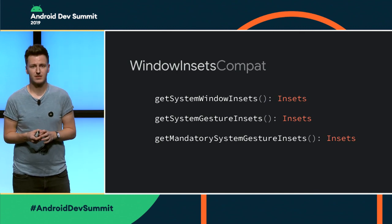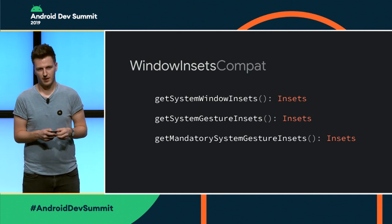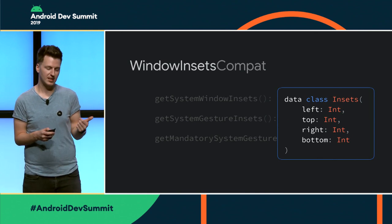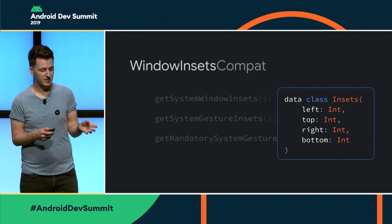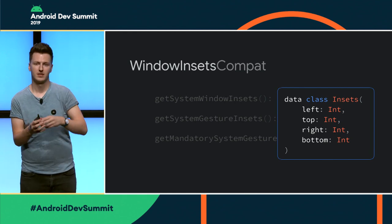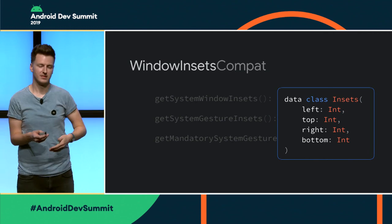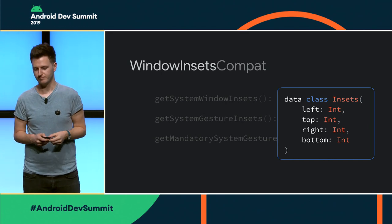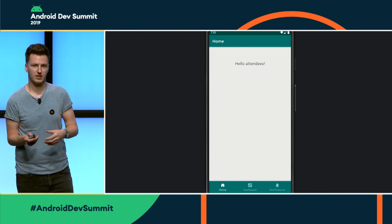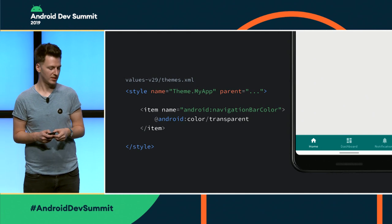In terms of window insets, there are three main methods you're going to use, and they map directly to the different inset types we spoke about earlier. The return type is an Insets object — just a value type with left, top, right, and bottom. The values are ints representing pixel values of the size of the inset from the edge. So the top value will be, say, 40 pixels from the top edge inwards. Now for a very quick example: here we have a very simple app, and we're going to apply all of our changes. The first thing is to change our navigation bar color, and you can see the navigation bar is gone.